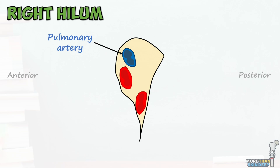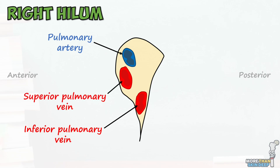Next we have the two large right pulmonary veins. Most inferior is the inferior pulmonary vein, which takes blood from the inferior lobe of the lung, and most superior is the superior pulmonary vein, which drains blood from the superior and middle lobes. Both of these take freshly oxygenated blood from the right lung and join directly to the left atrium, where the blood is then pumped to the rest of the body. Via these veins the heart is anchored in place in the mediastinum.